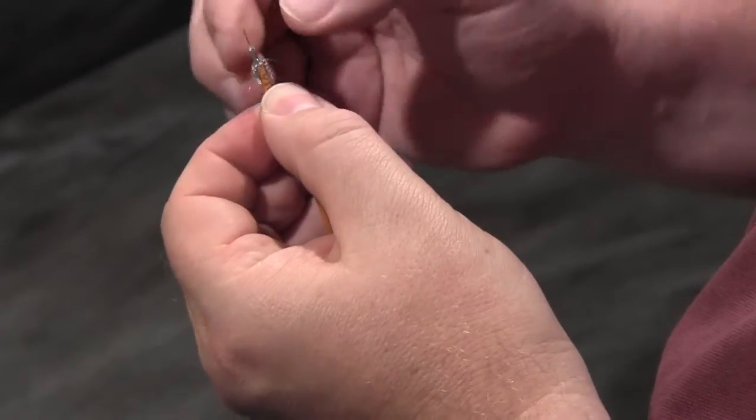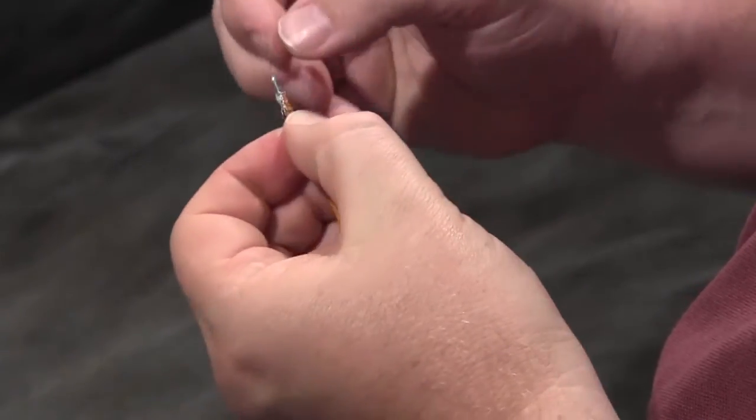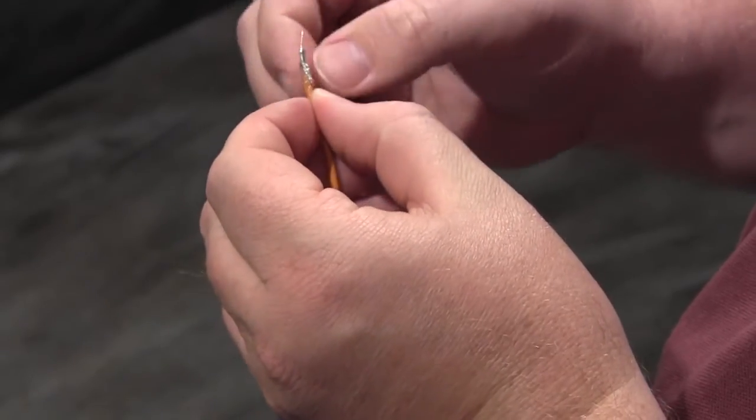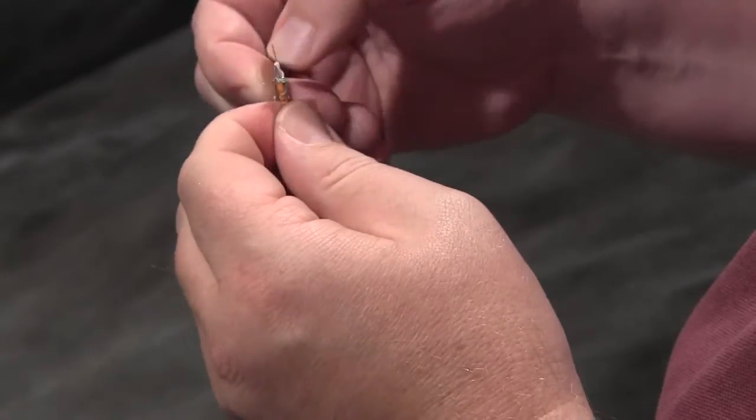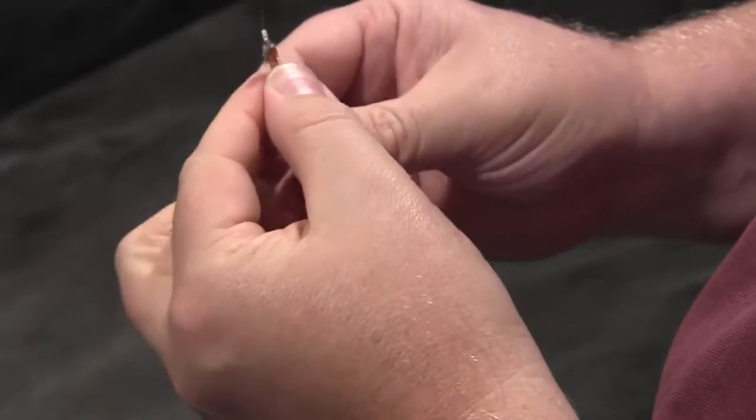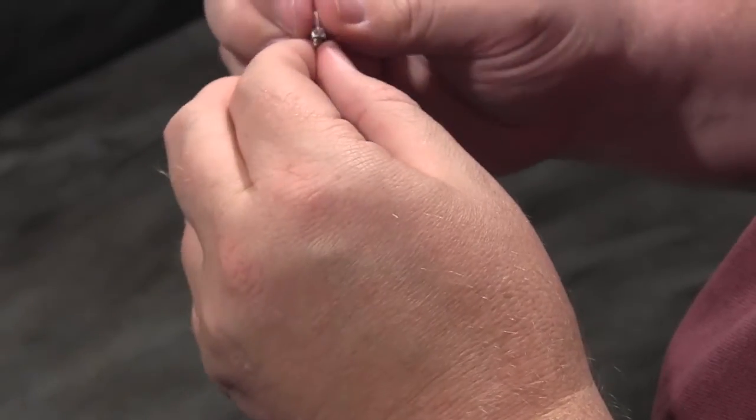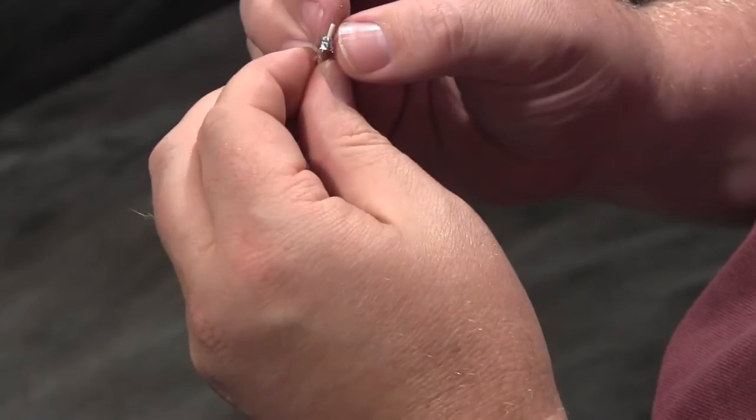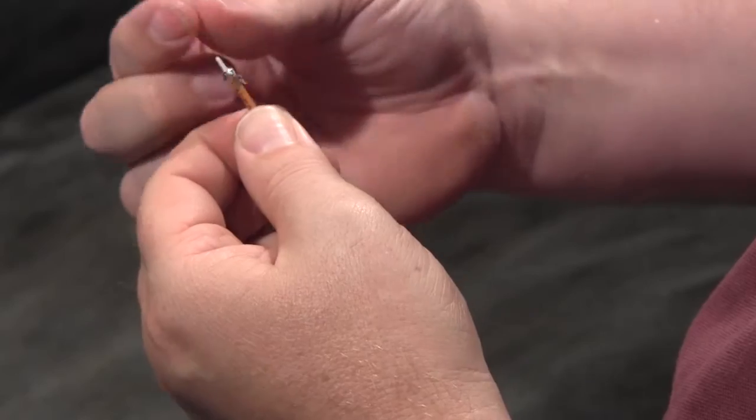An additional step that users can take is to also peel back the foil. What this does is gives greater visibility to the termination of the cable prep to allow you to ensure that there's absolutely no foil and no stray braid touching the center conductor.